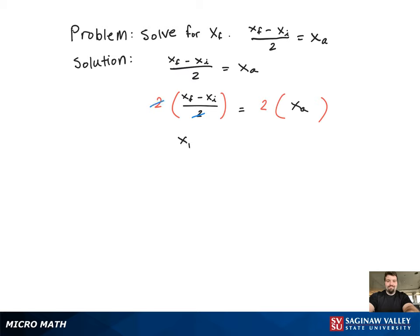Now that the equation doesn't have fractions in it anymore, we're going to try to get x sub f by itself on the left-hand side of the equation. So to do that, we're going to have to get rid of x sub i, so we're going to add x sub i to both sides of the equation. And since x sub f is by itself on the left-hand side of the equation, that means x sub f is solved for.